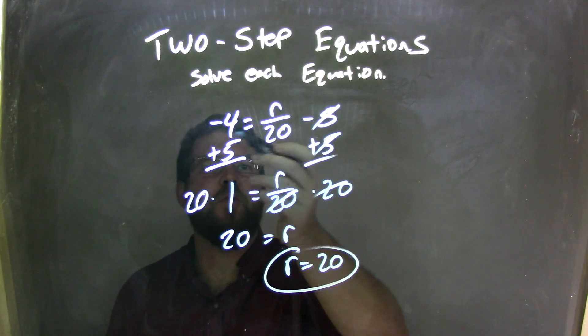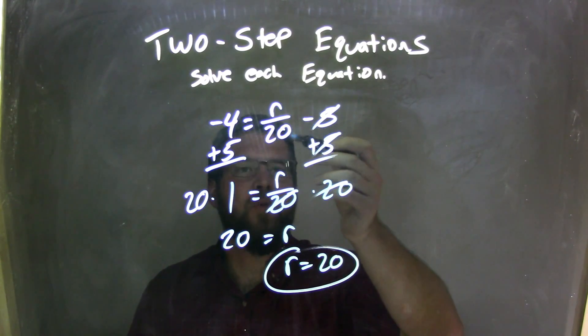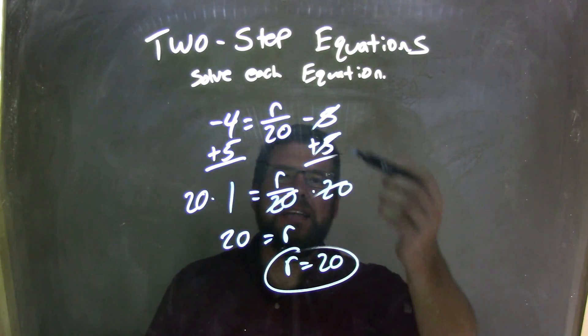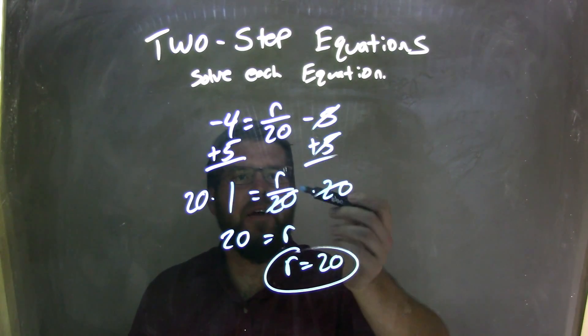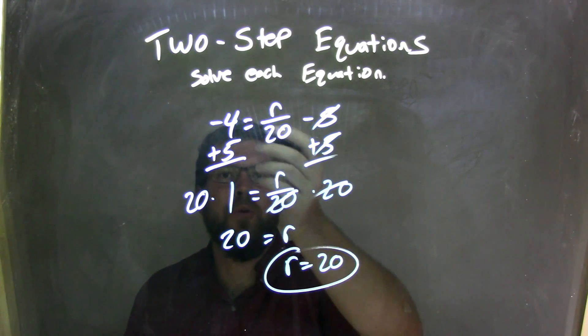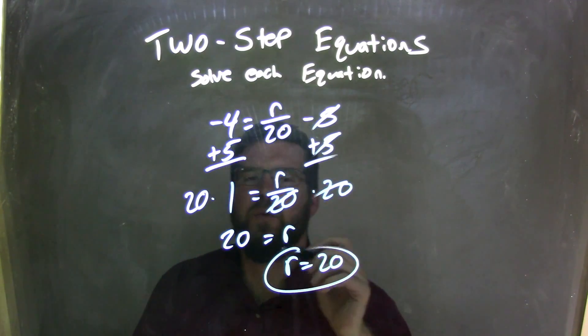So, let's recap. We started with negative 4 equals r over 20 minus 5. I first added 5 to both sides and canceled out that 5. Now I was left with negative 4 plus 5 is 1 equals r over 20.